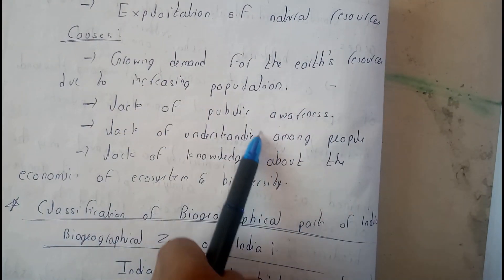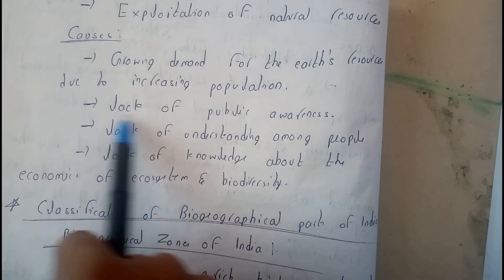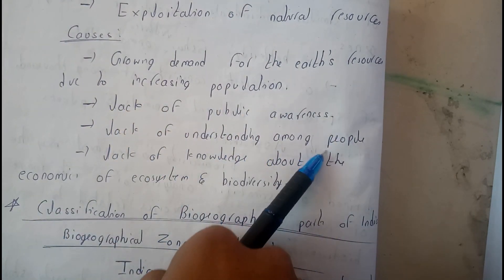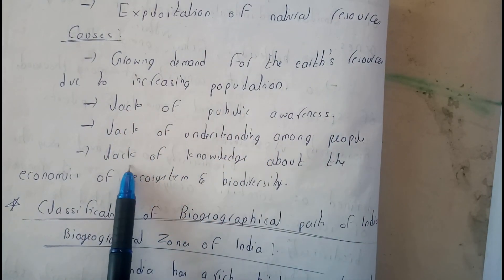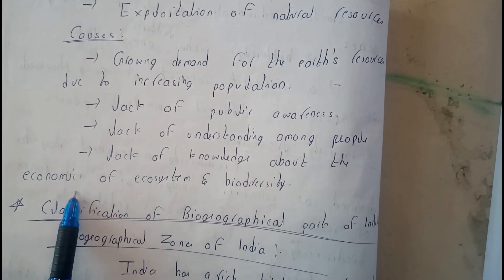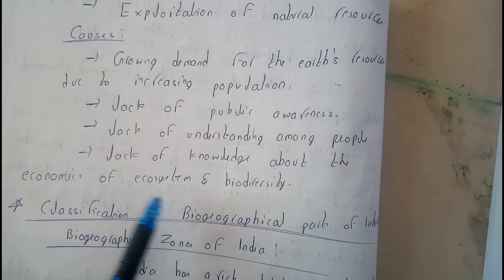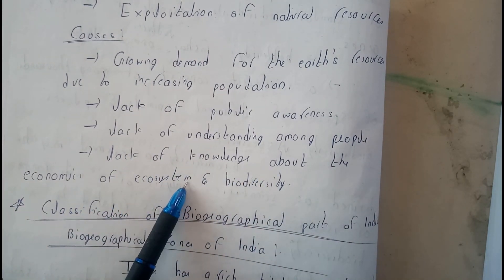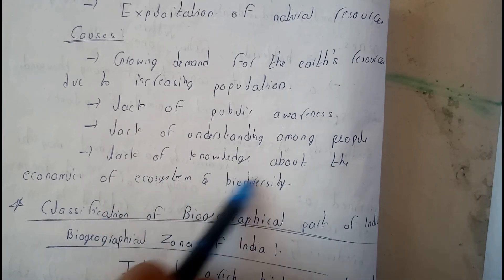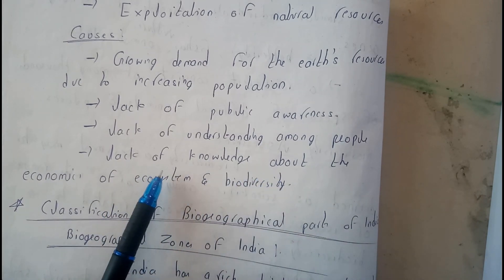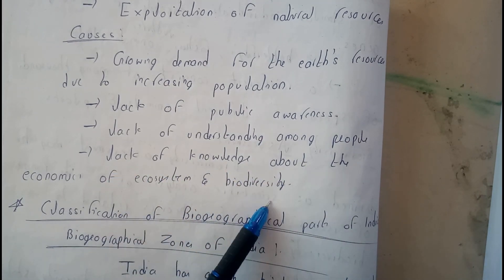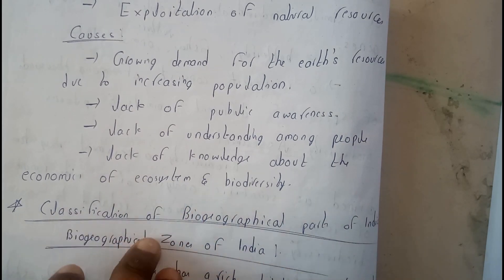Further causes include lack of public awareness, lack of understanding among the people, and lack of knowledge about the economics of ecosystems and biodiversity — as these two are the key foundations of our society. We should have lots of knowledge and awareness about them.